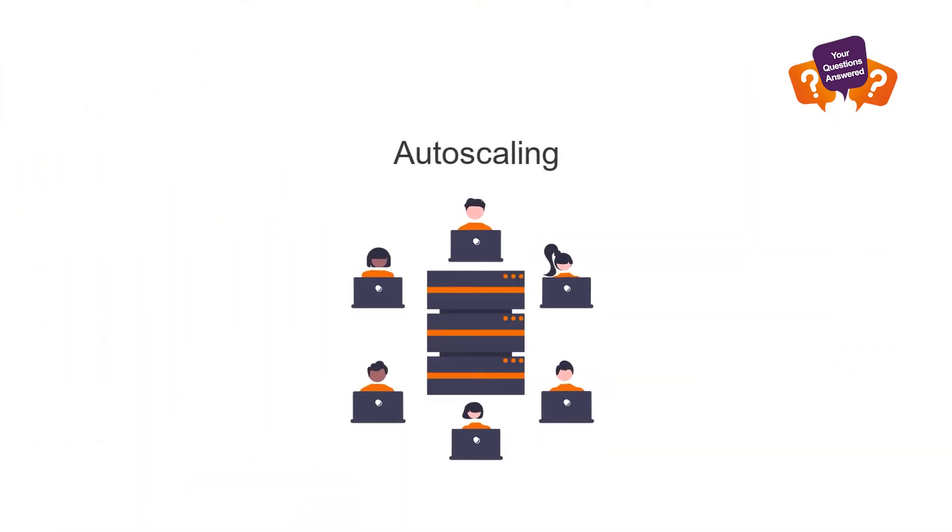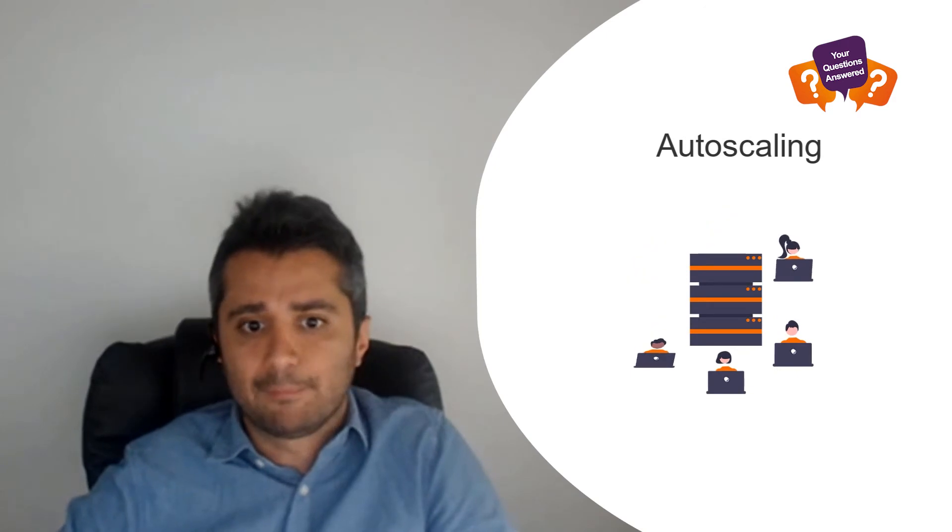Another difference is auto-scaling, which is a very good feature of AVD and doesn't exist natively in RDS — it can be achieved through comprehensive scripting, but it's not built in. Auto-scaling means the AVD environment automatically scales up or down depending on requirements. For example, if you have two servers running for 10–15 users and more users come in causing resource strain, more servers are automatically added and then shut down when users log off. This can significantly reduce Azure costs, which is why it's very common to use today.